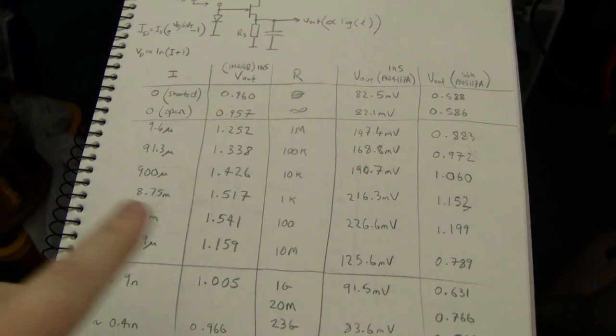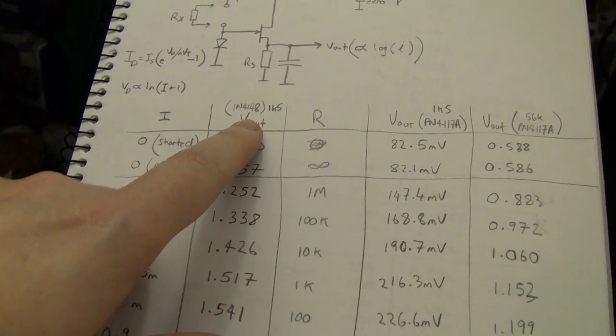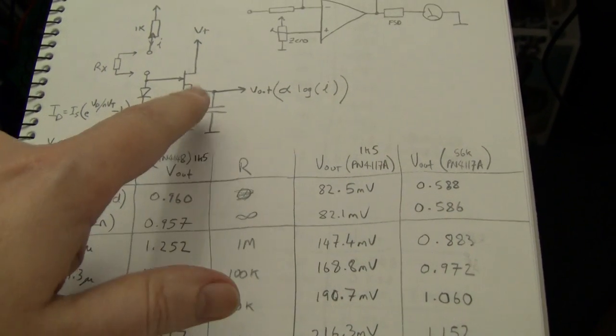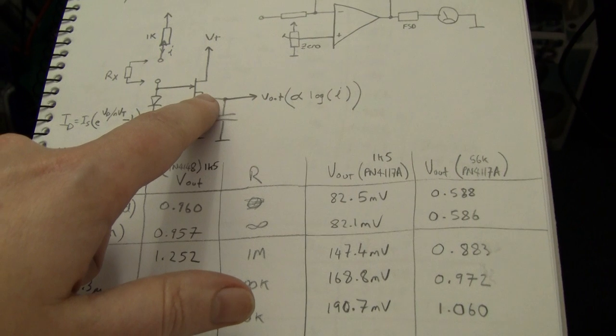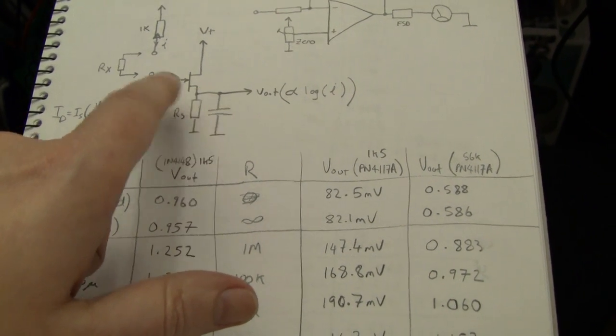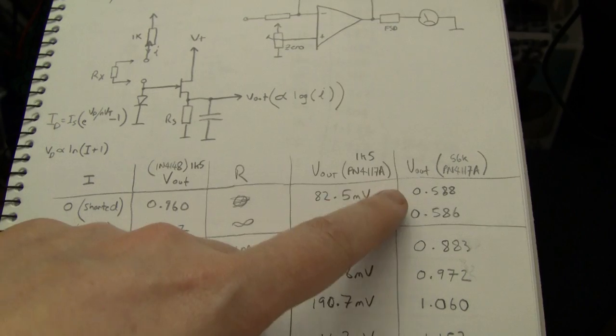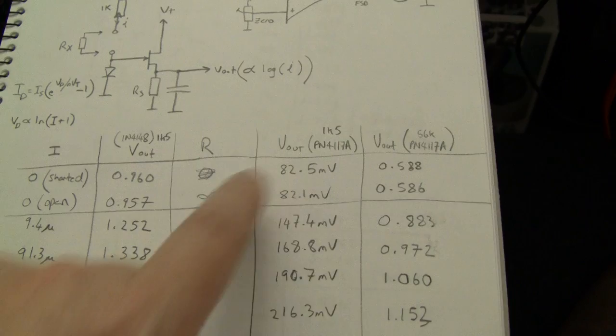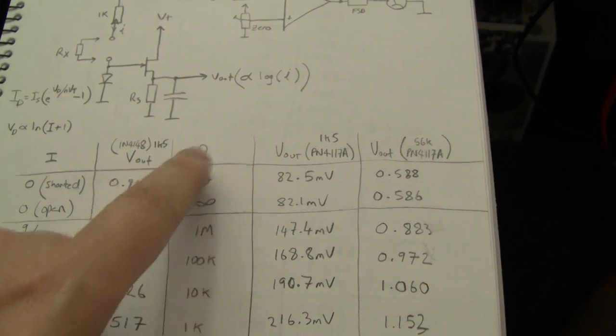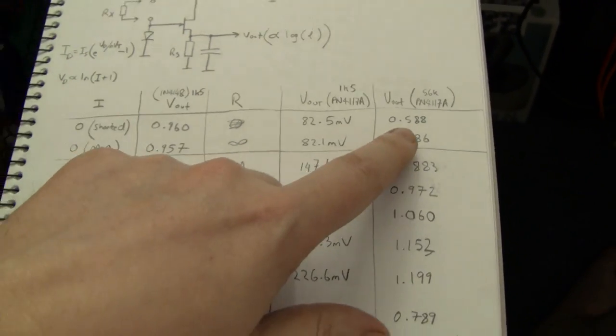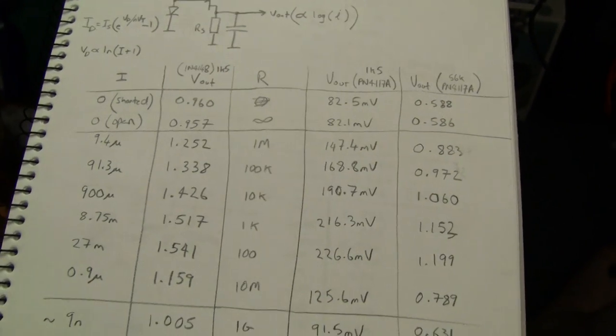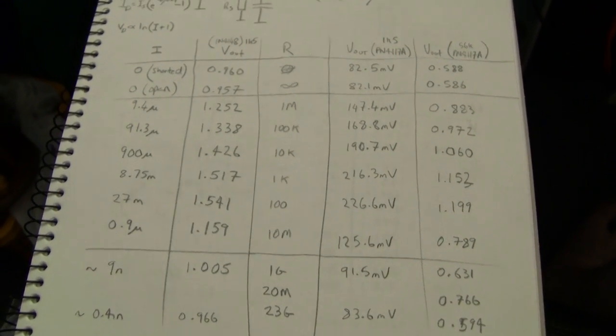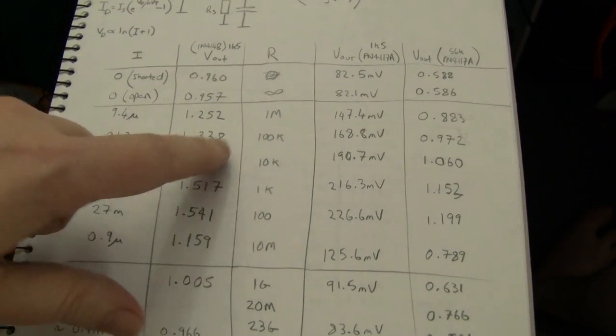As you can see here, I started off with a 1N4148 and later on I started using a 2N5484 for the JFET and then I moved to the PN4117A which has a very, very tiny leakage current and a very small IDSS so I had to change the resistance. Originally the source resistor was 1.5 kOhm so I changed this to 56k when I started playing with the PN4117A and collected a whole bunch of numbers based on the current through resistance.